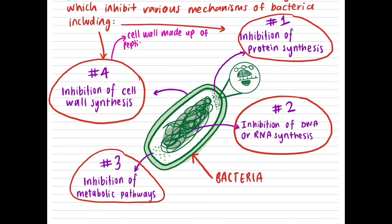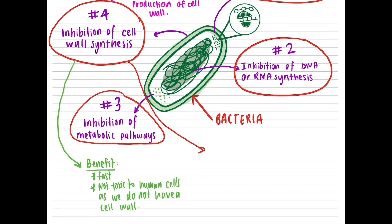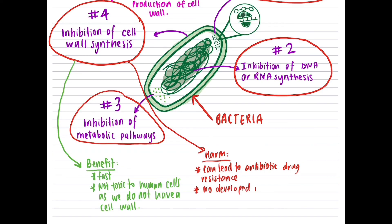The inhibition of cell wall synthesis involves antibiotics interfering with the ability to develop the essential cell wall polymer peptidoglycan. This is beneficial as it is fast and not toxic to human cells, since we do not have a cell wall. Although antibiotics can kill or inhibit bacteria, there are major disadvantages: one — developing antibiotic drug resistance, which is extremely dangerous; and two — they are not specific, so immunity for secondary exposure to the bacteria cannot be developed.